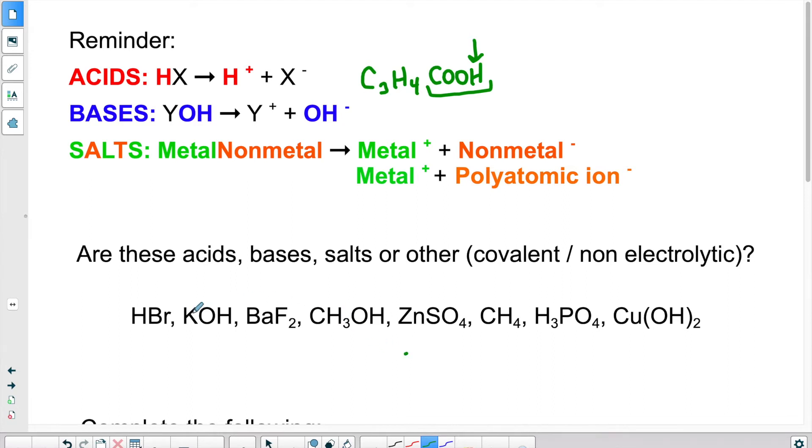So looking at the first one, we have HBr. We said if something starts with an H, it's an acid. Then we have KOH. So if something ends with OH, and starts with a metal, we have a base.